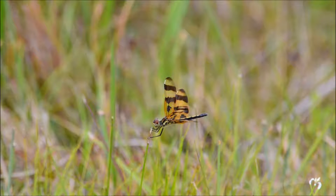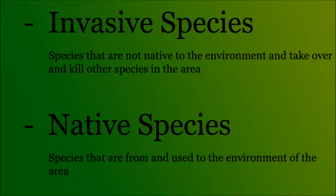The Florida Everglades are home to many varieties of plants and animals, each and every one of them part of their own ecosystem. Some of these plants or animals are invasive species, meaning that they are not native to the environment and violently take over other species in the area. Other plants or animals are native species, meaning that they are used to the environment of the Everglades. There were also several species of animals originating in the Everglades that are no longer there due to the takeover of invasive species.